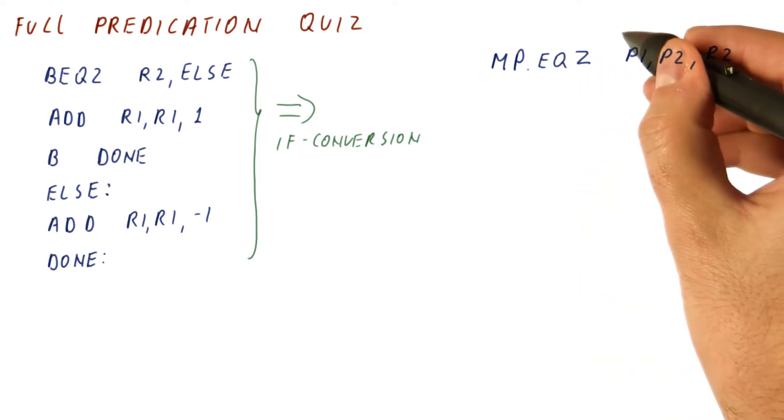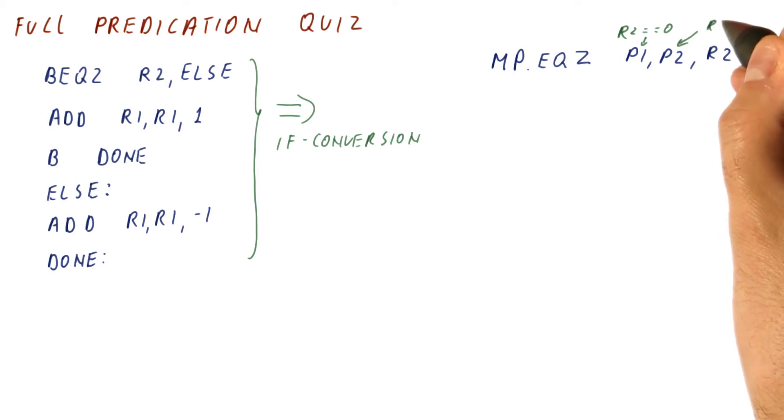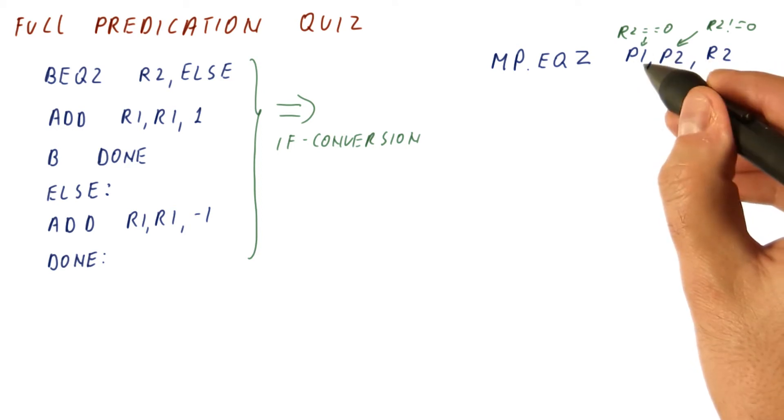Remember that this one will be set if r2 is equal to 0. And this one is set if r2 is not equal to 0. So they're opposite predicates.